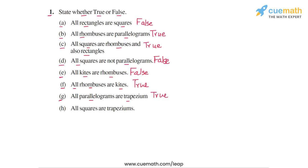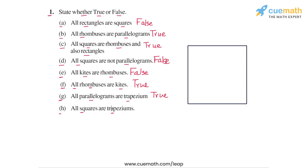Statement H says: all squares are trapeziums. A square is a parallelogram, and we just saw that all parallelograms are trapeziums, so all squares must also be trapeziums. Specifically, in a square we have both pairs of sides parallel to each other, confirming it is also a trapezium. Statement H is true, and this completes question number one.